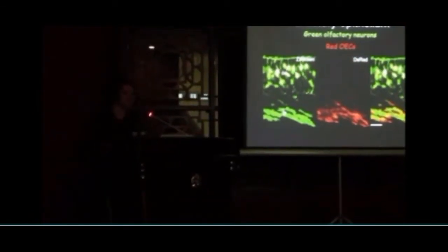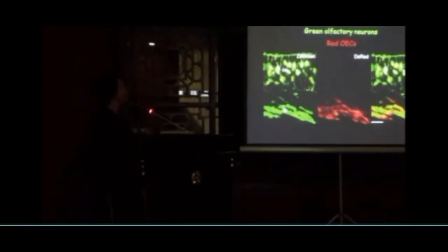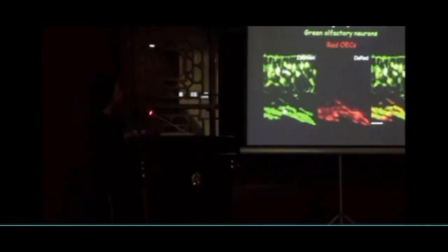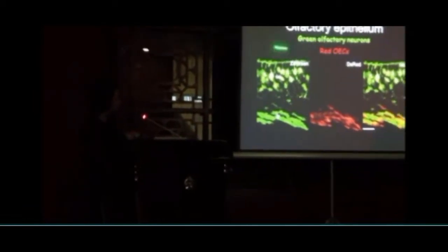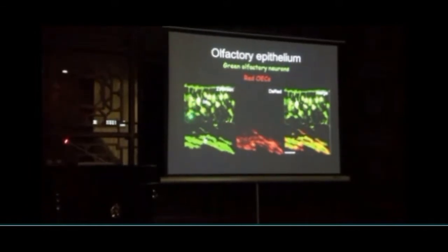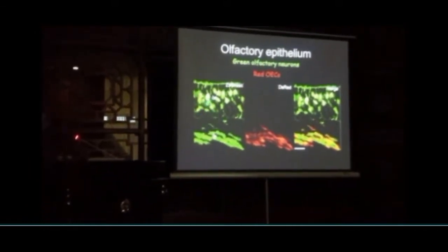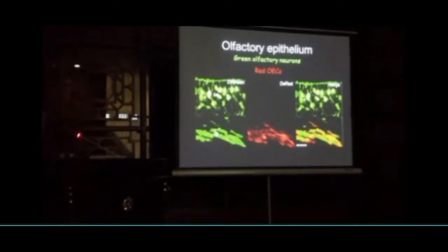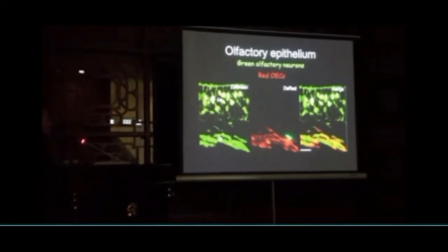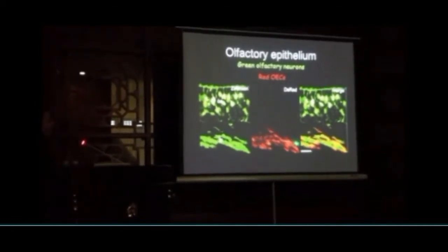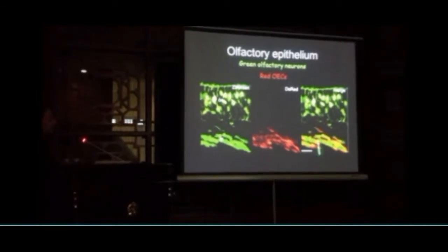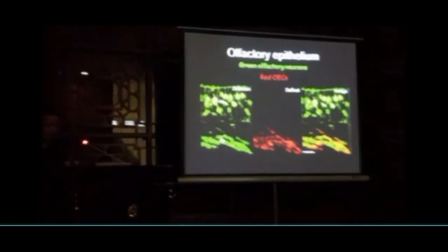Looking at the olfactory epithelium — basically what you could feel inside your nose and just underneath — we see the cell bodies of the olfactory neurons, with cilia sticking up into the inside of the nose. The axons go down into the lamina propria. When we turn on the red fluorescent light, we can see the red glial cells down in the lamina propria, but none up in the epithelium. When we merge the images, this is what we see.